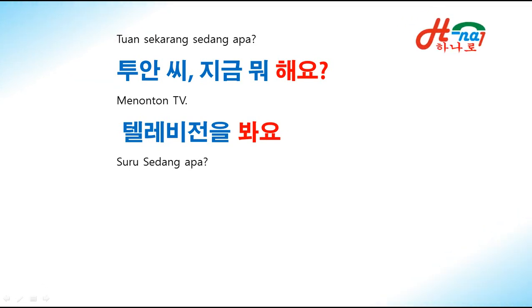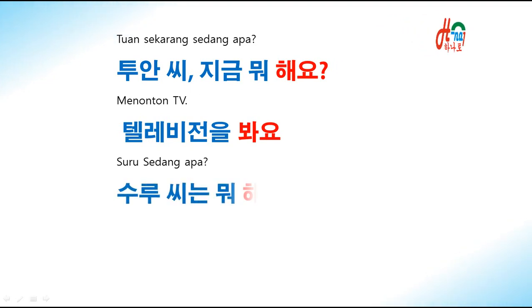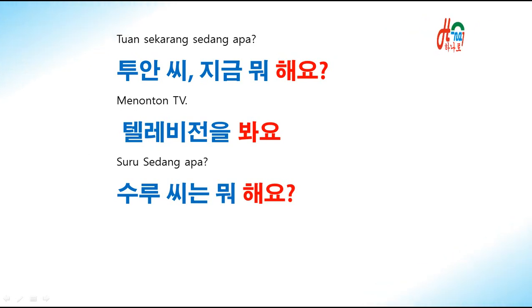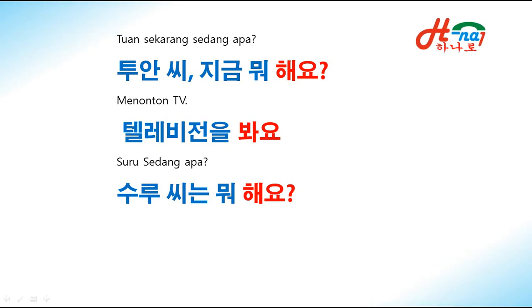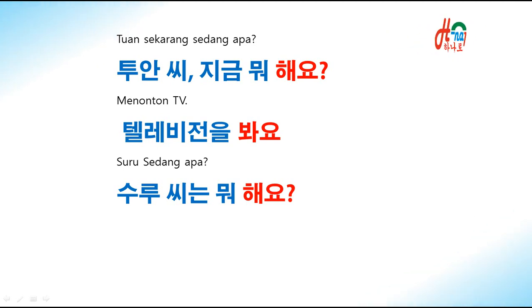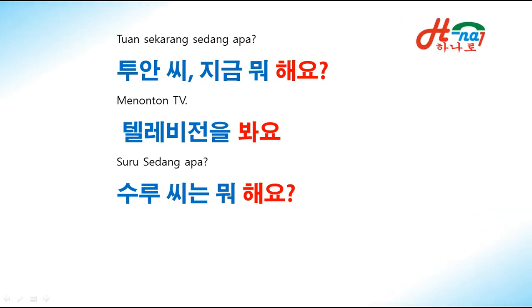Oke, bagaimana kalau orang Korea, teman Korea kita yang bicara. Tuan sekarang sedang apa? Tuan si, 지금 뭐 해요? Lagi-lagi, karena melakukan jadi hada ya, menjadi hyo. Misalkan, menonton TV. Bagaimana? Telebijonel buh-ayo. Lagi-lagi kata buh-ayo yaitu akarnya adalah buh plus ayo, dijadikan satu buh-ayo. Sekarang, suru sedang apa? Suru si, nung mo heo. Sini kalau di bahasa kita adalah mas, pak, bu, dan sebagainya. Jadi saudara, saudara tuang, saudara suru, mo heo — melakukan apa? Tadi yang heo tetap, hada tetap heo.